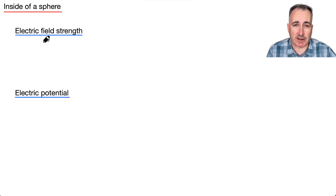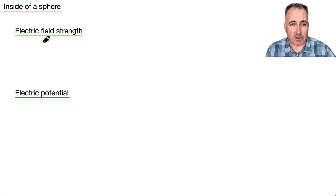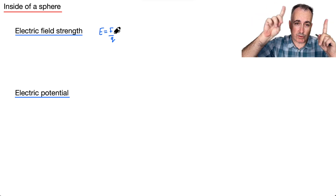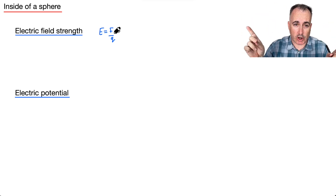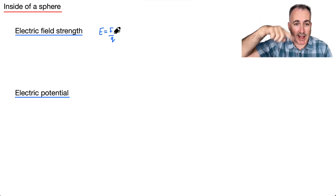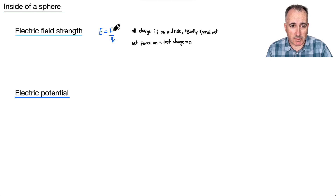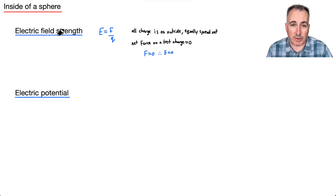What happens inside of this sphere? For electric field strength, we have E equals F over Q. If you're inside the sphere, it's hollow, so all around you is the charge — equally spread out all around you. Because of that, it all cancels out. If the net force on the test charge is zero, all these forces cancel out, then if F equals zero, so does E. Therefore, the electric field strength inside the sphere is zero.